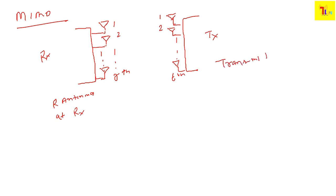From the transmitter we are transmitting signals x1, x2, and so on. This is the free space channel. In free space there is a channel model we must account for, because when a signal travels through the air interface, changes happen — some amplitude changes and some phase changes occur during transmission.